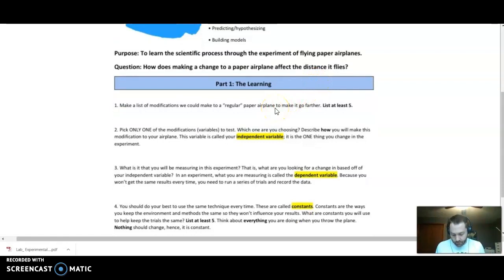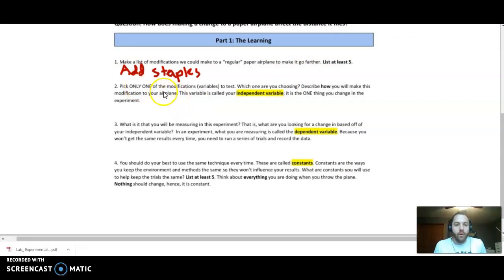So what I'm going to be doing is just giving some examples. For example, in my experiment, what I might choose to do is I'm going to add a bunch of staples into my airplane to determine how does that affect the distance that the paper airplane flies. Picking only one of the modifications, you need to list at least five things that you could do to a paper airplane to change it. You can get creative with it. Pick only one of the modifications, variables to test. Next, this variable is called your independent variable. The thing that you are changing is your independent variable. In this case, I can say that adding staples is going to be my independent variable.